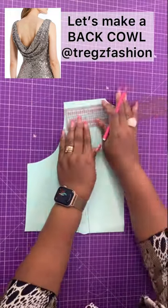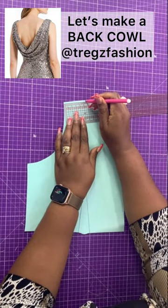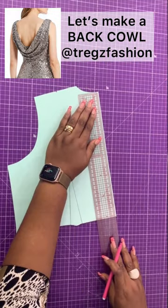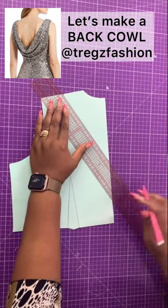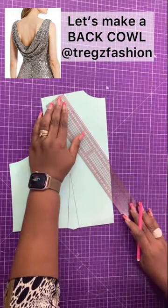Let's make a back cowl. First, find the midpoint on the shoulder bodies. Next, decide your back depth, then connect the point and measure the line.